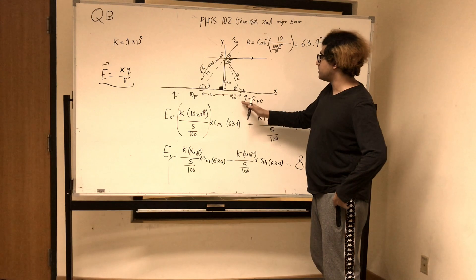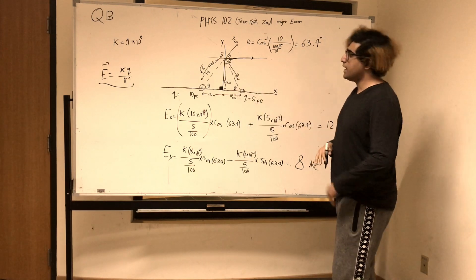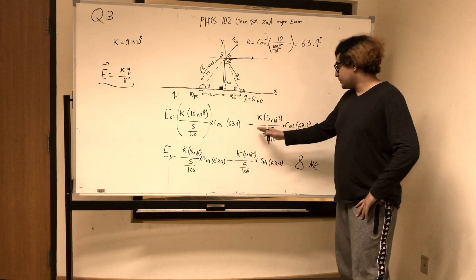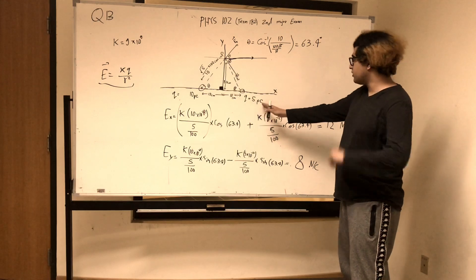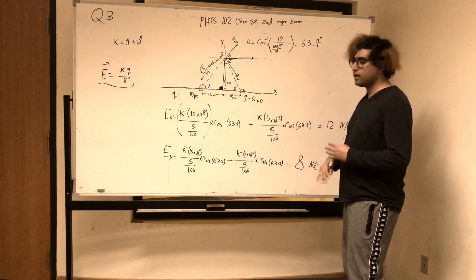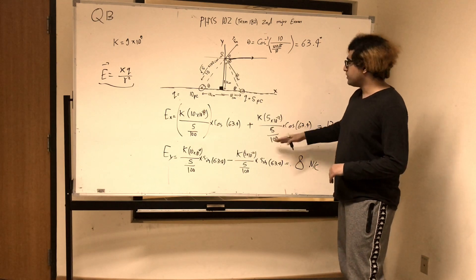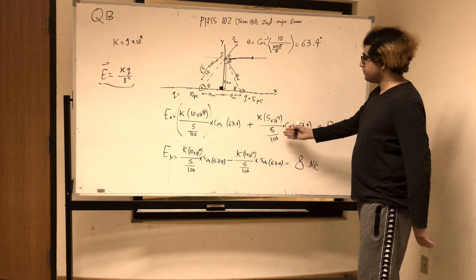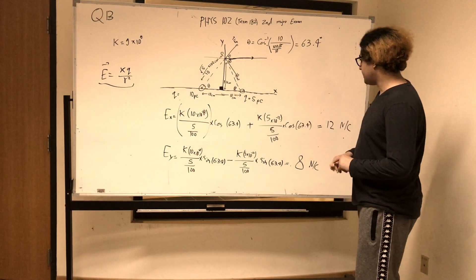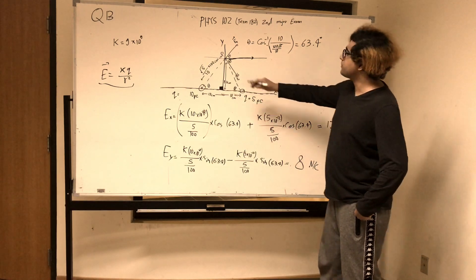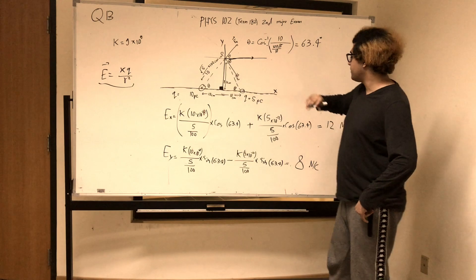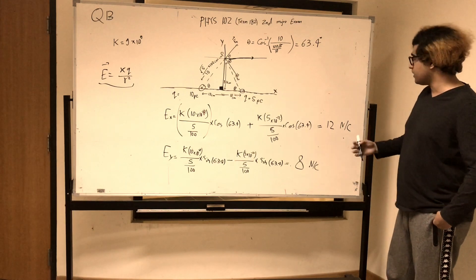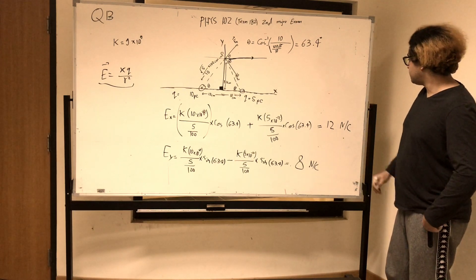Now let's figure out the x-component of the electric field due to the negative charge. Again, direct application of our electric field formula: k times the charge, which is 5 picocoulombs converted to coulombs by multiplying by 10 to the negative 12, over the distance between the charge and the point squared — which is the same distance as before, 5 over 100. Then multiply by cosine of the angle to get the x-component. Add these two together and you'll get 12 newtons per coulomb.